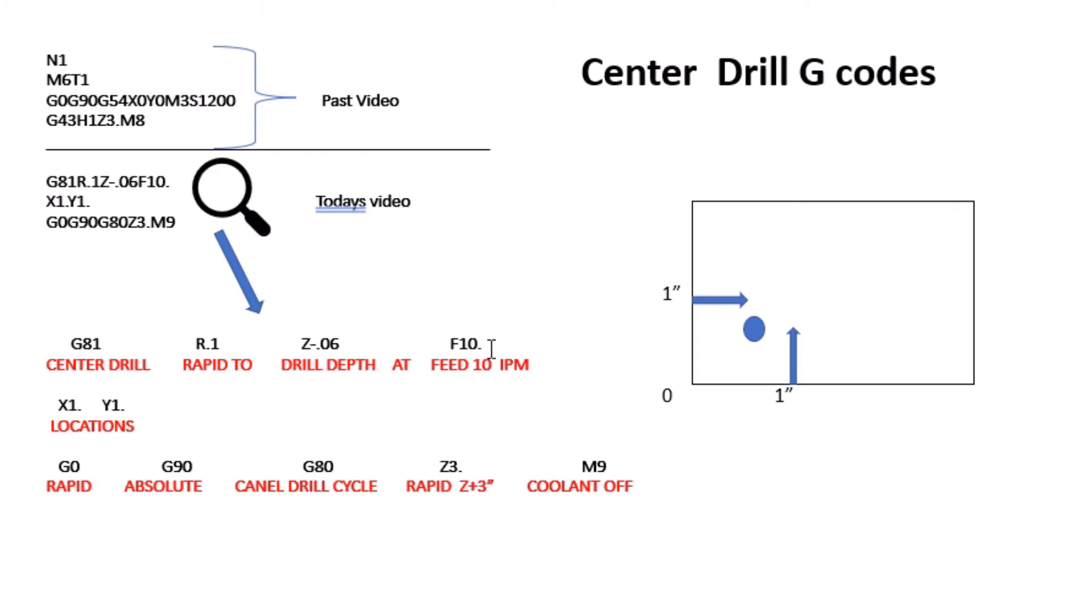Now anything after that is going to do the locations of where you want that. Right here it's going to do X1 point, Y1 point. Now it's going to also, in this particular instance, drill a hole at X0 Y0, because the first hole will always be the coordinates in the introduction program.